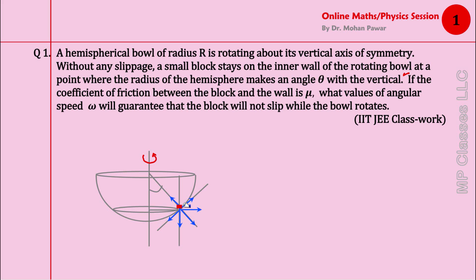And this is the radius of the hemisphere, and with the vertical the radius makes angle theta, which defines the position where the mass is when the bowl is rotating.